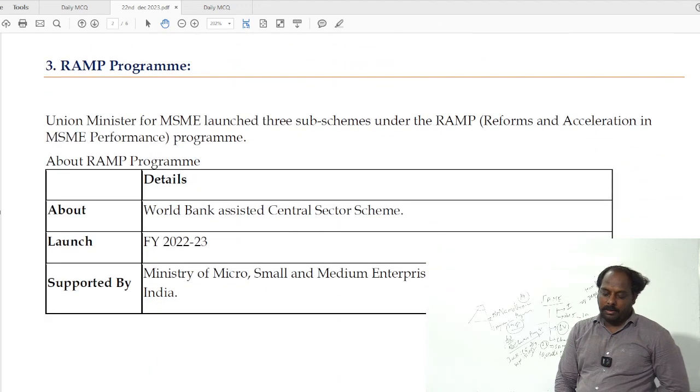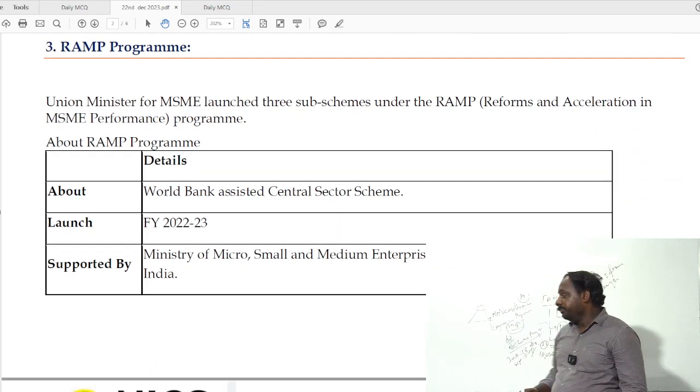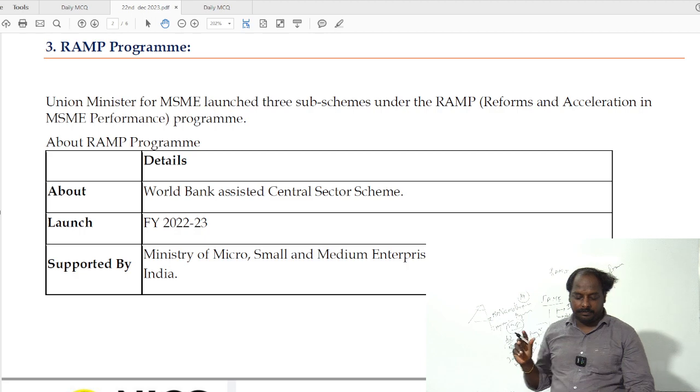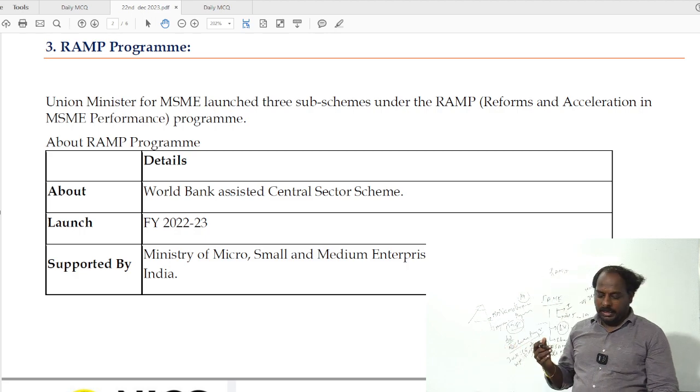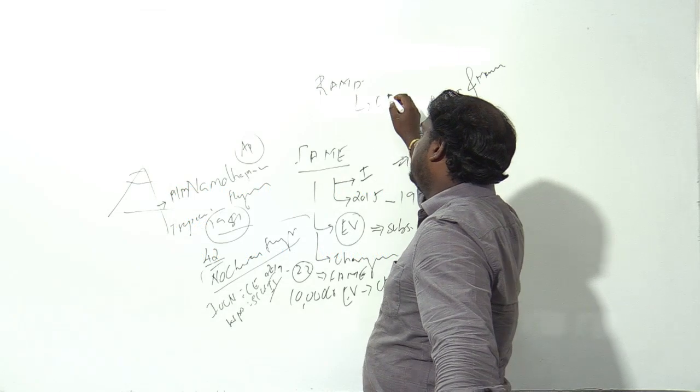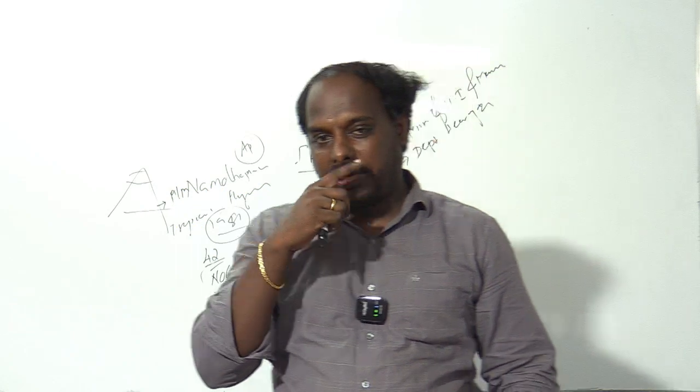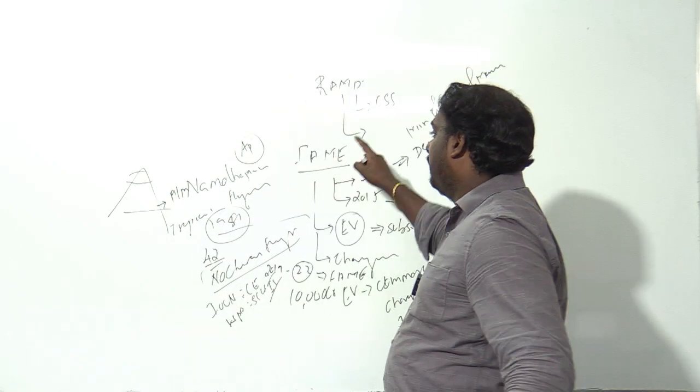The next is a scheme called the RAMP program launched by MSME. The new scheme, Reform and Acceleration of MSME, is a central sector scheme. It was proposed in the 2022-23 budget when it was launched.